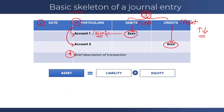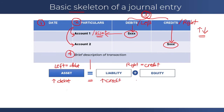Assets are on the left side of the accounting equation, and the claims are on the right side. Left means debit, and right means credit. So all of the items on the left side increase through debit, which means all assets increase through debit. Liabilities and equity increase through credit. And the inverse is true as well: the asset side decreases through credit, and the liability side decreases through debit.